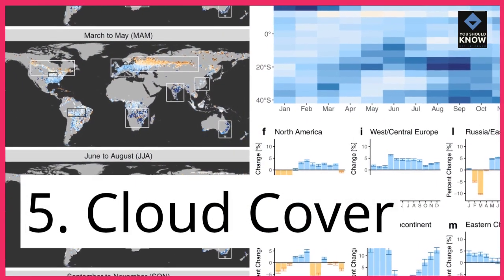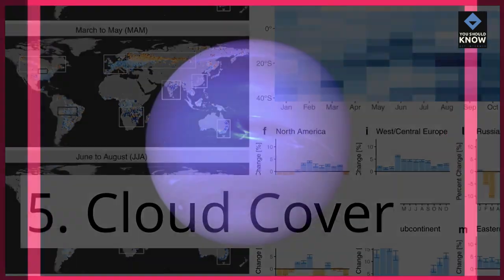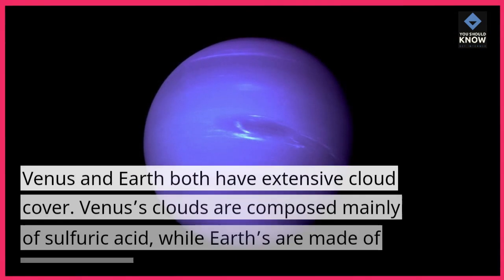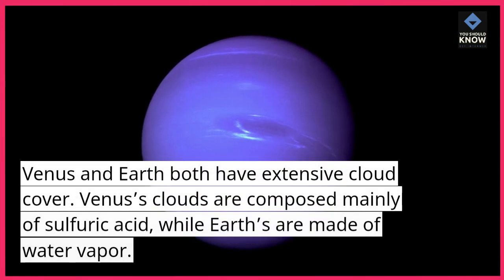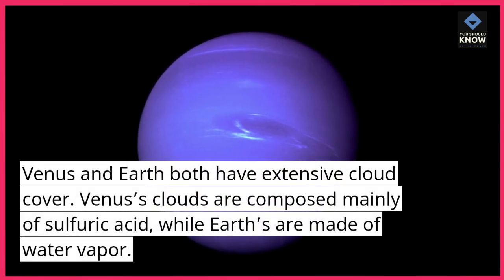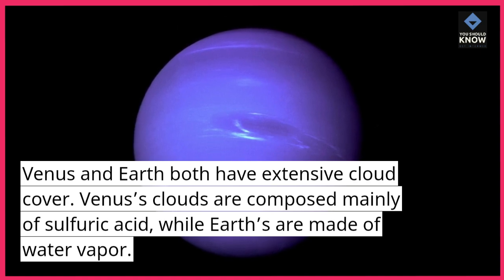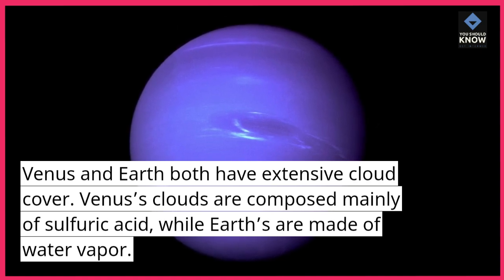5. Cloud Cover: Venus and Earth both have extensive cloud cover. Venus's clouds are composed mainly of sulfuric acid, while Earth's are made of water vapor.